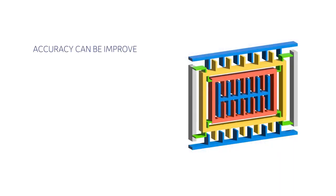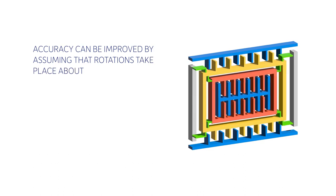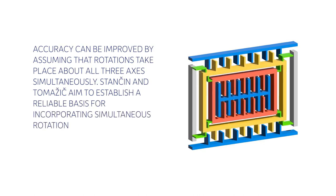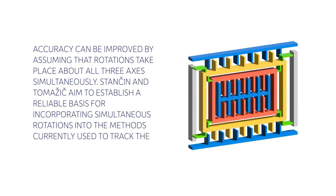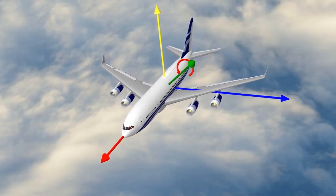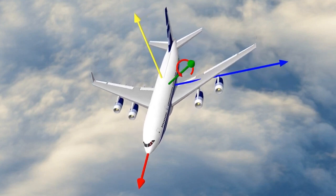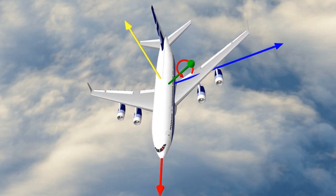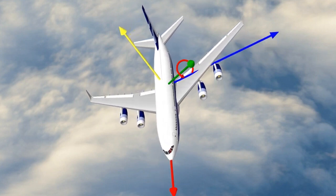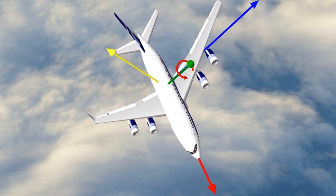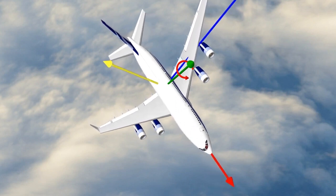Accuracy can be improved by assuming that rotations take place about all three axes simultaneously. Stanchin and Tomajic aim to establish a reliable basis for incorporating simultaneous rotations into the methods currently used to track the orientation of rigid bodies. They showed that a gyroscope measures the three components of the rotation vector, which is aligned with the actual axis of the sensor's rotation. If this axis doesn't change during the measurement, the final orientation can be calculated by multiplying this vector by the rotation time. This vector is called the simultaneous orthogonal rotation angle, or SORA.